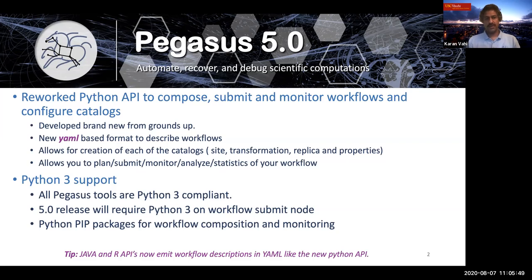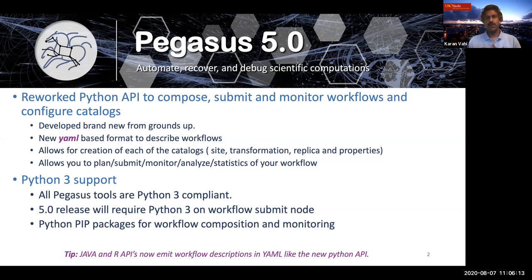Another big change coming with 5.0 is that we are embracing Python 3. Pegasus 5.0 is fully Python 3 compliant. In fact, the 5.0 release will require Python 3 on the workflow submit node to function. The components of Pegasus deployed as part of the Pegasus worker package on compute nodes are keeping backward compatibility with Python 2.7. Additionally, with 5.0 we'll be releasing standalone Python PIP packages for workflow composition and monitoring, enabling you to import the client APIs into your own virtual environments.